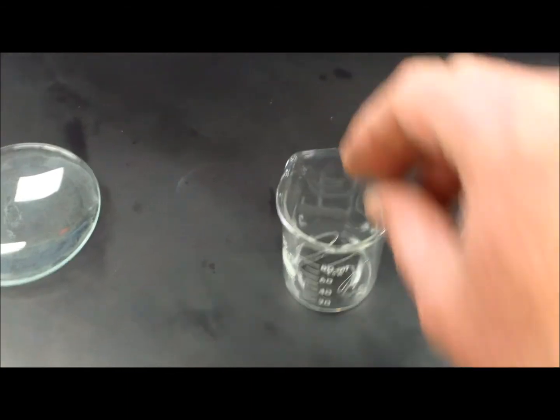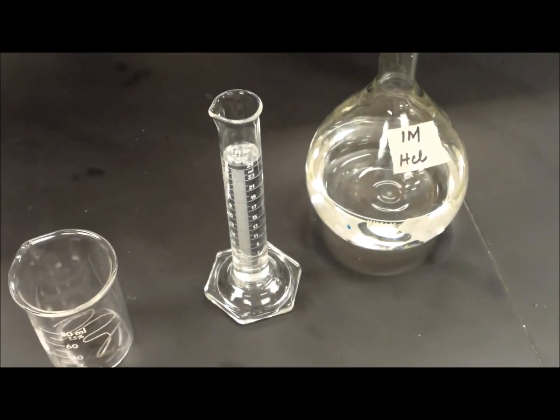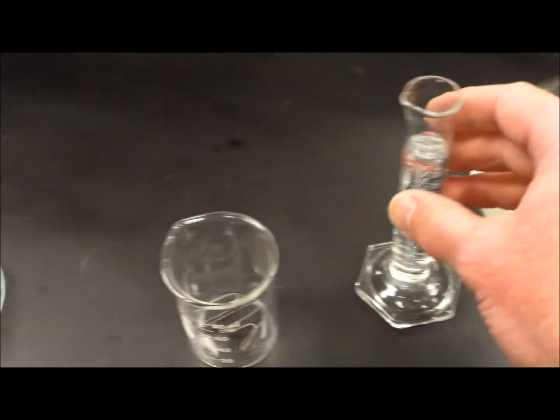For the next step of the experiment, I'll put the magnesium ribbon into the beaker and I'm going to add 25 milliliters of that one molar hydrochloric acid.